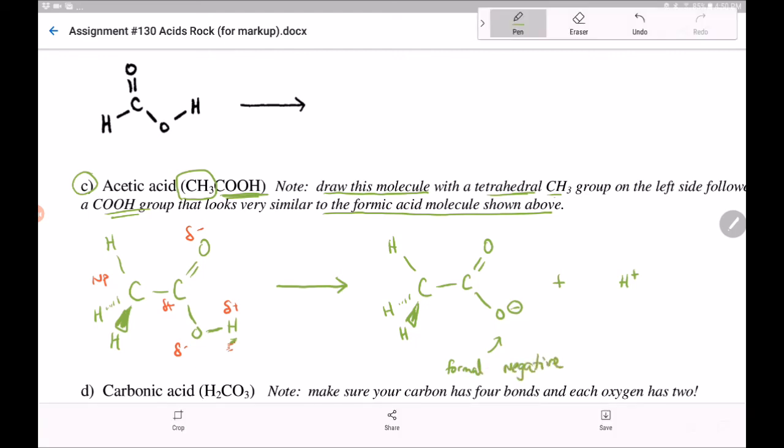So that's the way you draw the structure. That's how you identify the hydrogen that can dissociate. It's the polar one. And when it does dissociate, it becomes an ion. And that leaves behind a formal negative.